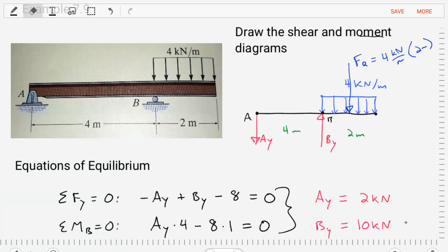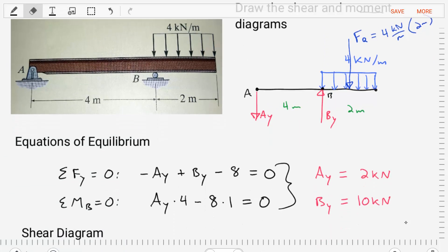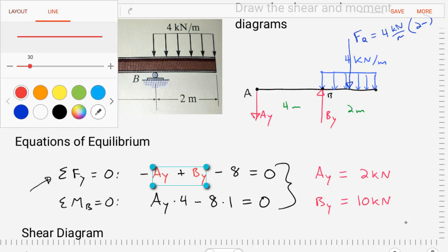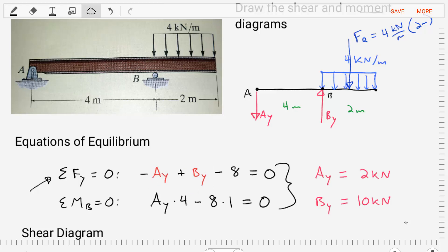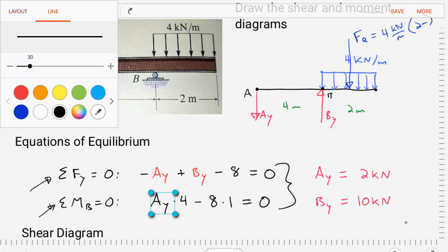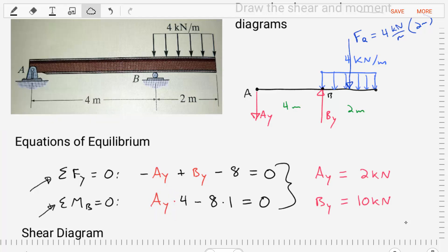Let's craft equations of equilibrium. Let's start with summing the forces in the Y direction. When we do that, we'll find negative AY plus BY minus 8 is equal to 0. Let's then do the sum of the moments about point B. When we do that, we find AY times 4 minus 8 times 1 is equal to 0.